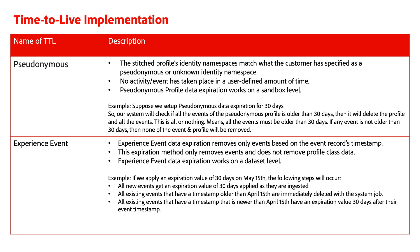For example, suppose we set up pseudonymous data expiration for 30 days. The system will check if all events of the pseudonymous profile are older than 30 days, and then it will delete all the events as well as the profile. This is all or nothing — meaning all events must be older than 30 days. If any of the events are not older than 30 days, none of the events or the profile will be deleted.